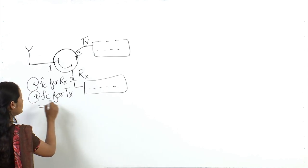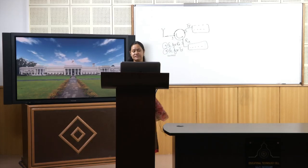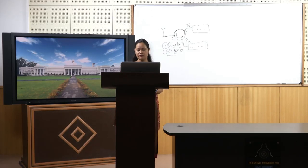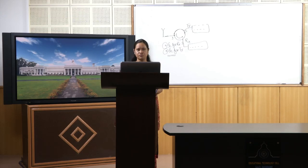That was the example when transmitter and receiver operate at the same frequency. When they operate at different frequencies, the diplexer comes into the picture, which is basically a filter bank. Because the transmitter and receiver are at different frequencies, when the transmitter is working, its filter allows the signal to go to the antenna. When the signal is being received, the other filter acts because the first filter blocks that signal. A simple diplexer or filter bank is useful in this case, but at the same frequency we may have to use a circulator.